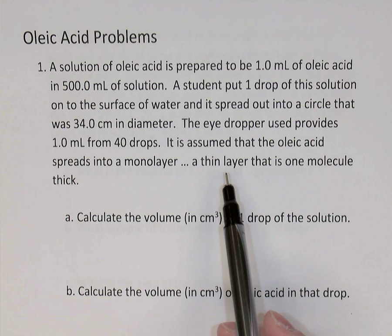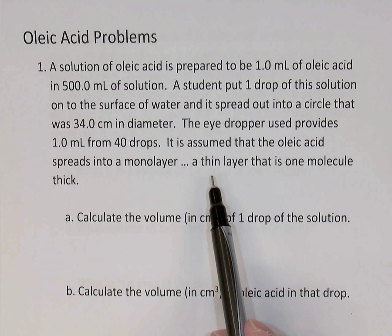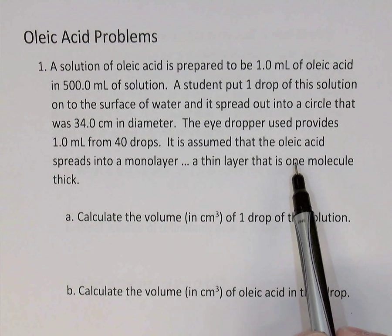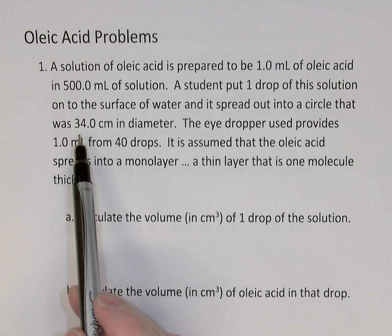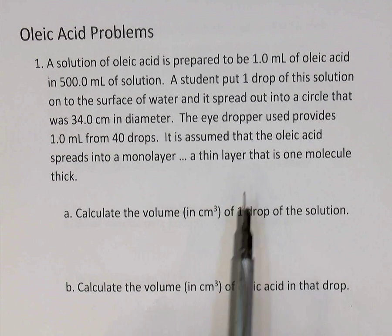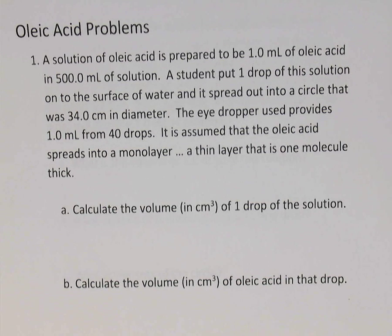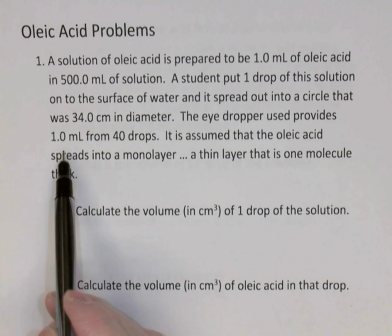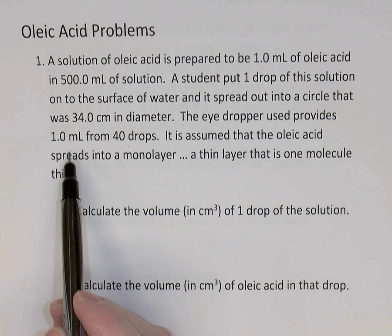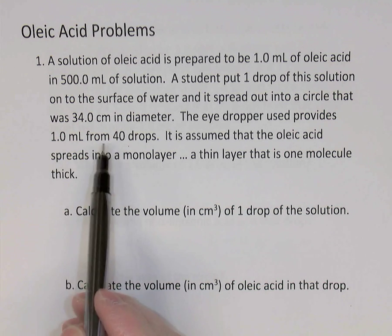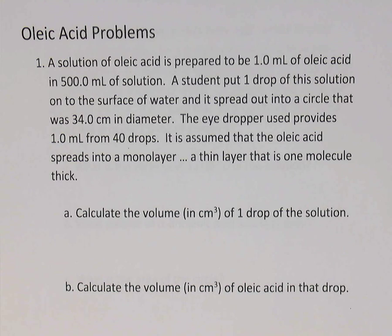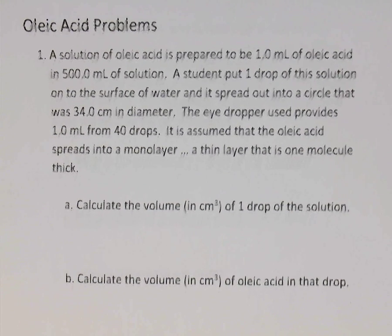A student took one drop of that solution and put it onto the surface of water. The oleic acid spreads out on the surface of water into a circle with a diameter of 34 centimeters. The eyedropper used to put the oleic acid on the water is one where you can get 40 drops of solution in one milliliter — so 40 drops equals one mil. It's assumed that the oleic acid spreads into a monolayer, that is a thin layer one molecule thick.